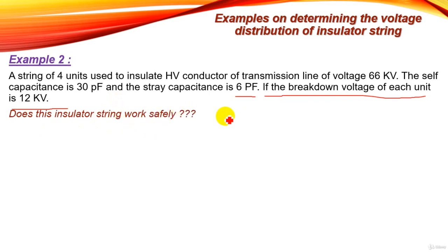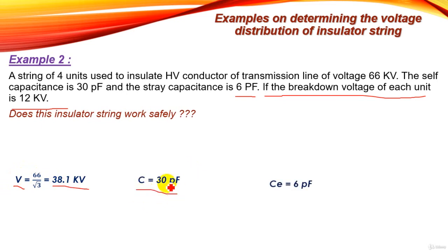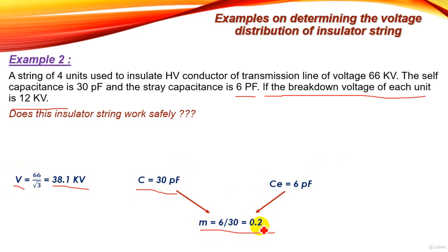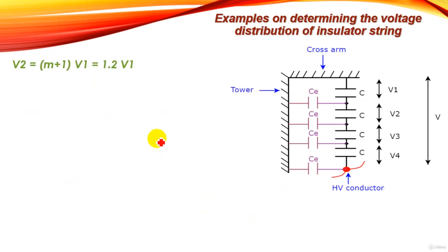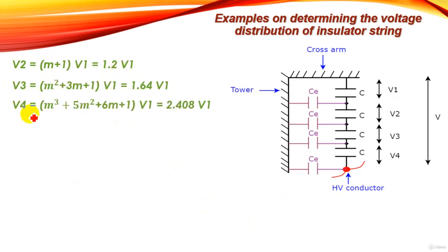The phase voltage is 66 over root 3, which equals 38.1 kilovolt. Self-capacitance is 30 pF and stray capacitance is 6 pF, so m equals 6 over 30, giving m equals 0.2. The voltage distribution equations become: V2 equals 1.2·V1, V3 equals 1.64·V1, and V4 equals 2.408·V1.